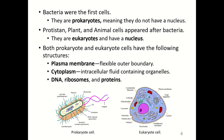Bacteria were the first cells. They are prokaryotes, meaning they do not have a nucleus. Protist, plant, and animal cells appeared after bacteria. They are eukaryotes and have a nucleus. Prokaryote means 'before the nucleus.' Eukaryote means 'a true nucleus.'